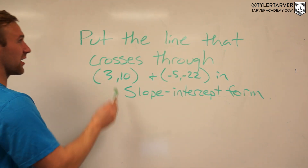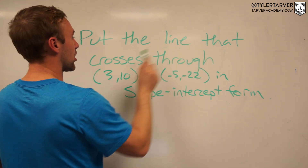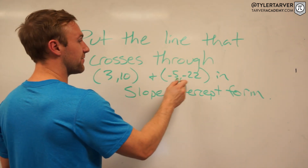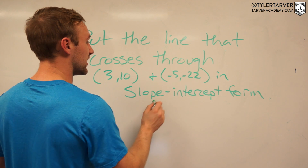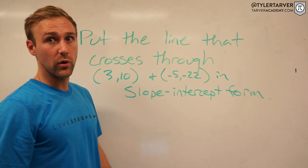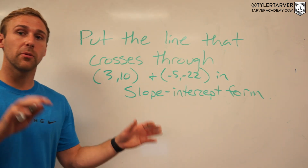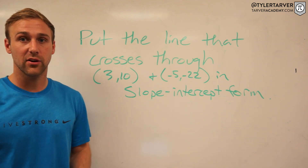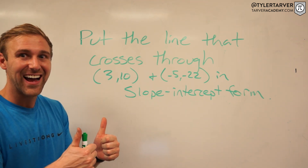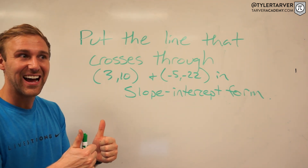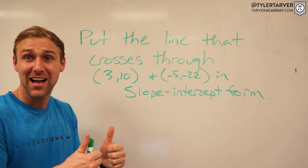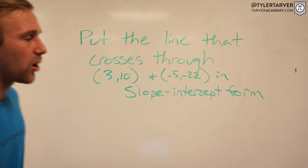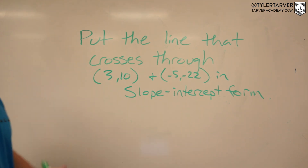Okay, let's get started. Put the line that crosses through (3, 10) and (-5, -22) in slope-intercept form. If you could pause the video, work the problem, and then hit resume, we'll work it together. Ready? Mark, set, go.